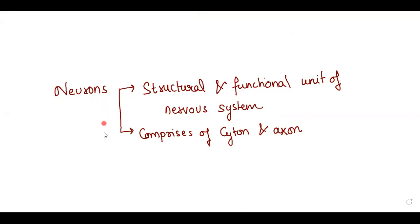So neurons are basically comprising of cyton and axon. So let's see their structure in detail. First, we'll talk about cyton.